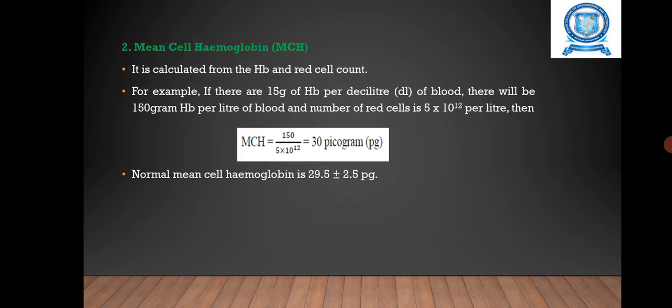Next is mean cell hemoglobin (MCH). It is calculated from the hemoglobin and red cell count. For example, consider 15 grams of hemoglobin per deciliter of blood. Then there will be 150 grams hemoglobin per liter of blood, and the number of red cells is 5 × 10^12 per liter. Then MCH equals 150 divided by 5 × 10^12, which equals 30 picograms. The normal mean cell hemoglobin is 29.5 ± 2.5 picograms.